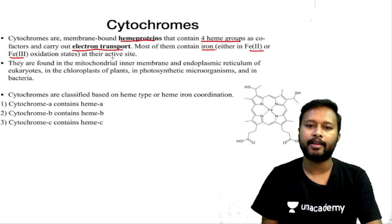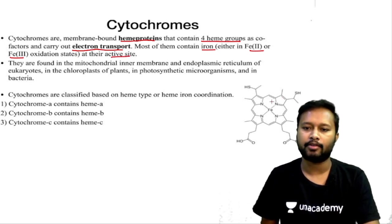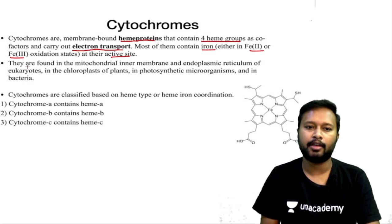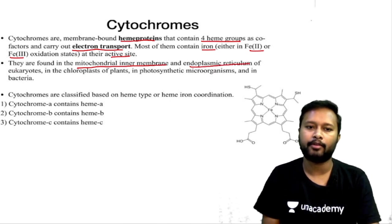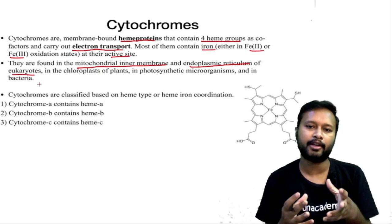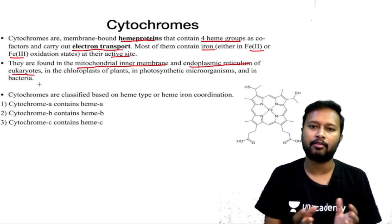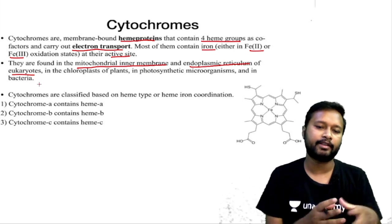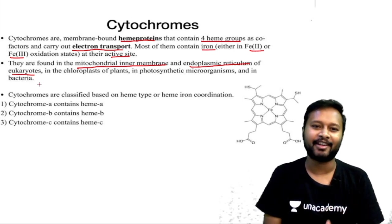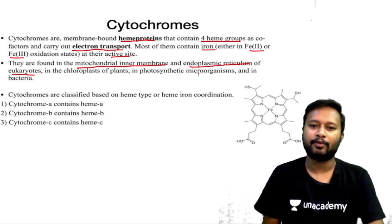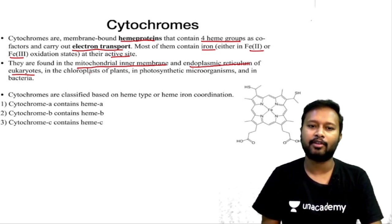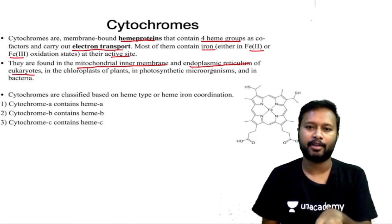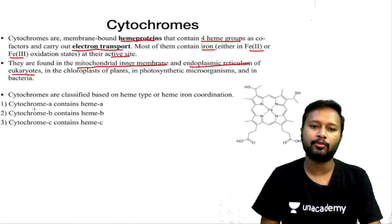Most cytochromes contain iron in +2 or +3 state at their active site. They are found in the mitochondrial inner membrane and endoplasmic reticulum of eukaryotes, in the chloroplast of plants, in photosynthetic microorganisms, and in bacteria. Cytochromes are of types a, b, and c, containing heme a, b, and c respectively.